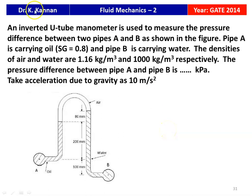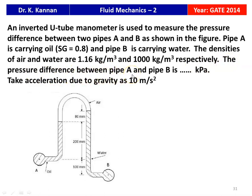The next question from the 2014 question paper: an inverted U-tube manometer is used to measure the pressure difference between two pipes A and B. Pipe A carries oil of specific gravity 0.8 and pipe B carries water; air is the manometric fluid. The densities of air and water are 1.16 kg/m³ and 1000 kg/m³ respectively. The pressure difference between pipe A and pipe B is to be found in kilo Pascal. Take g equal to 10 m/s². The answer is 2.2 kilo Pascal. We will see how in the next slide.